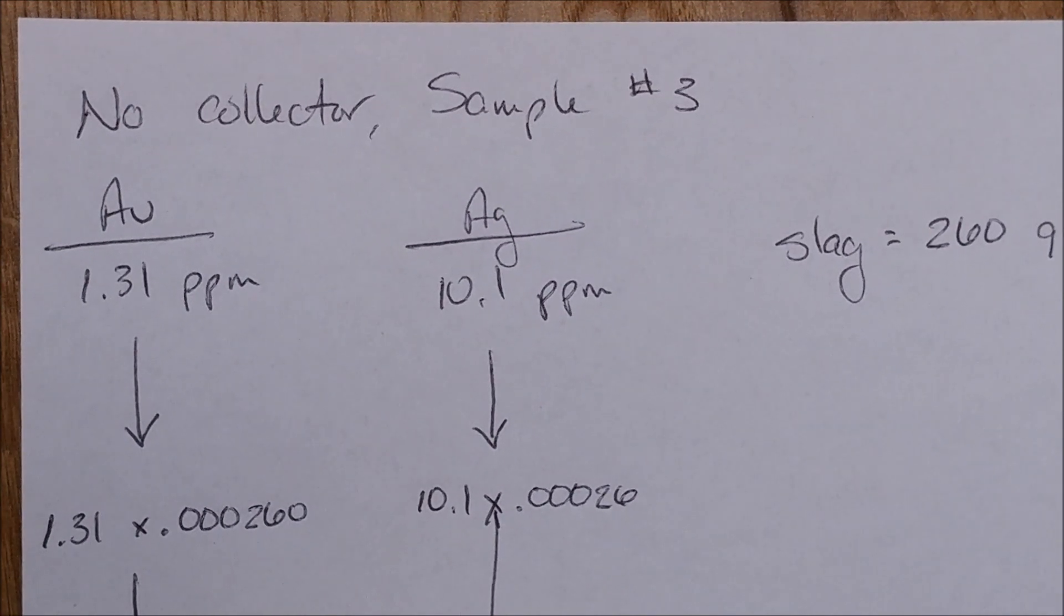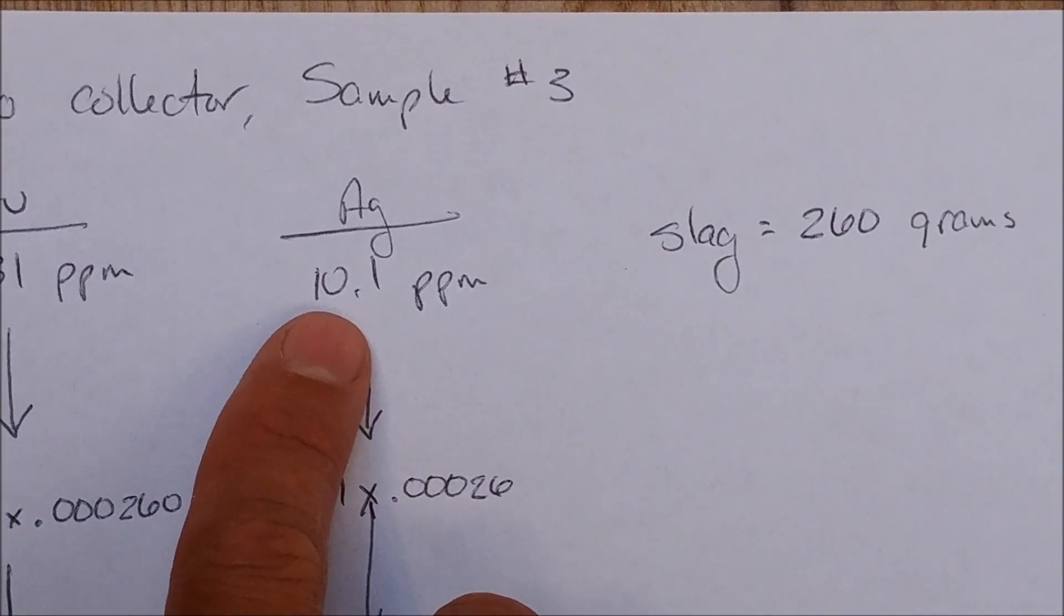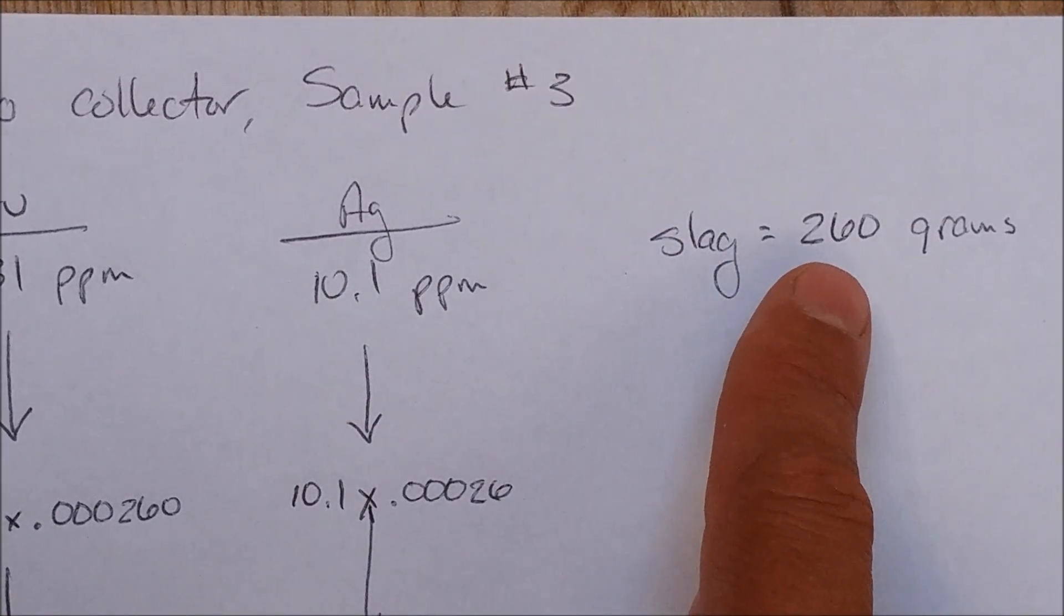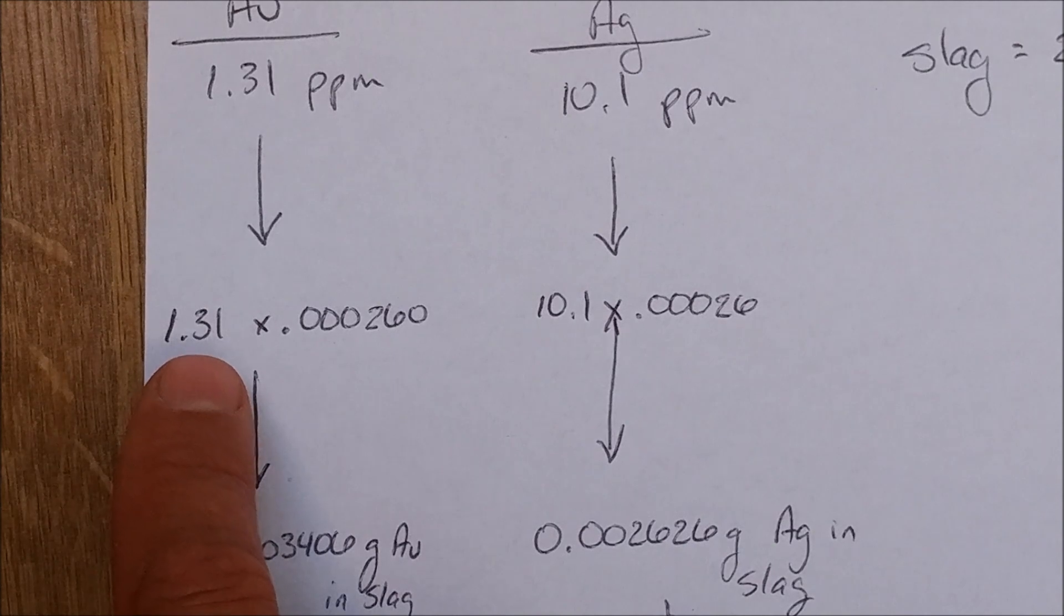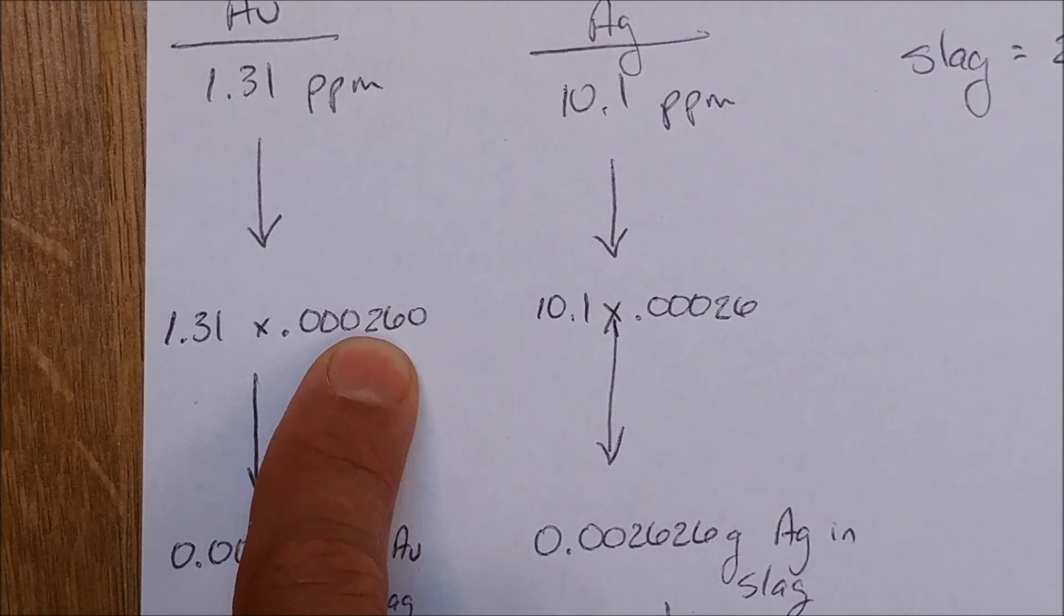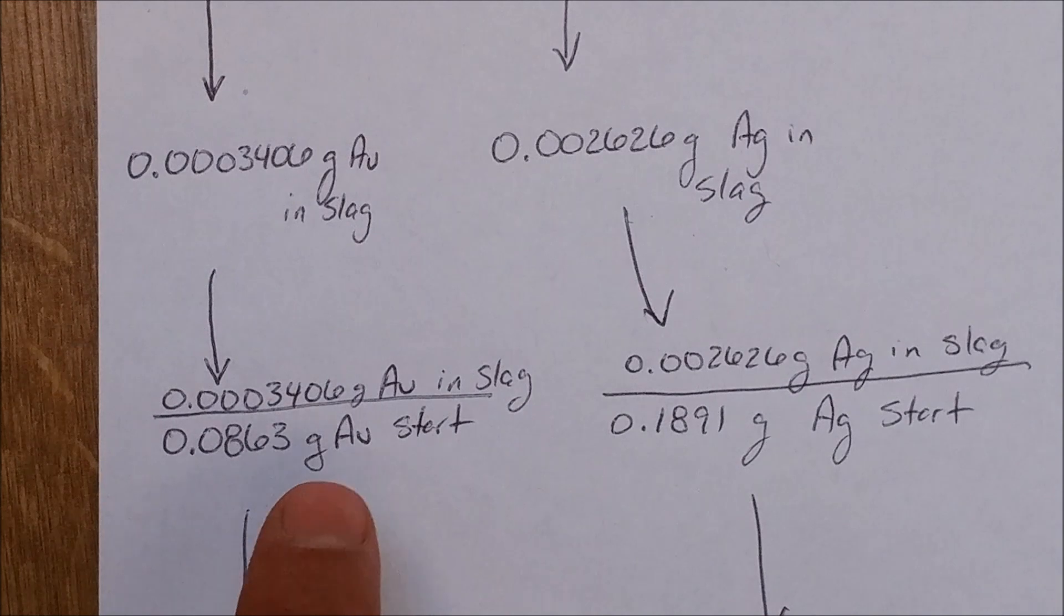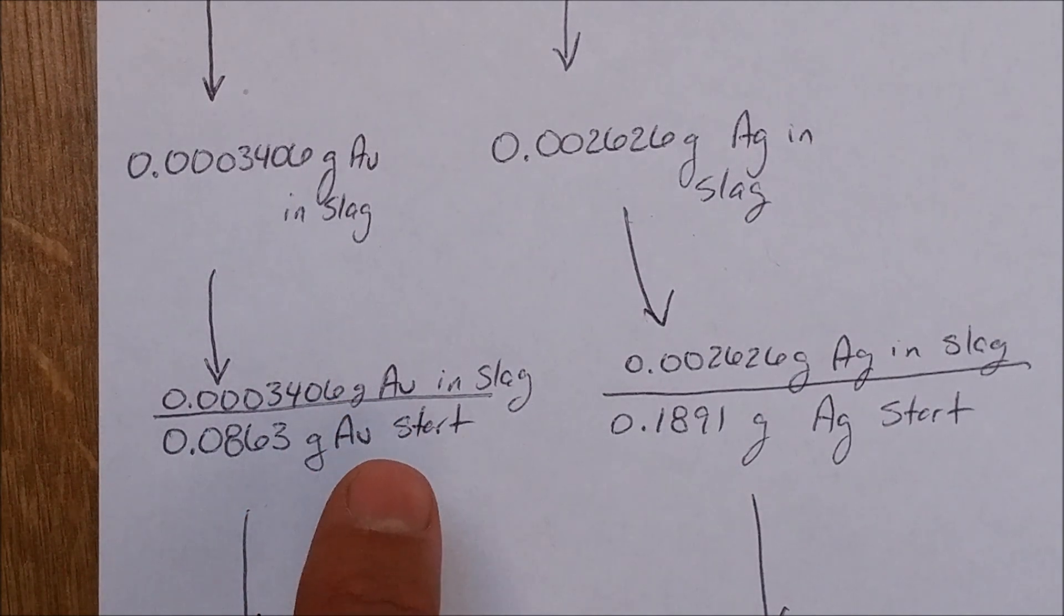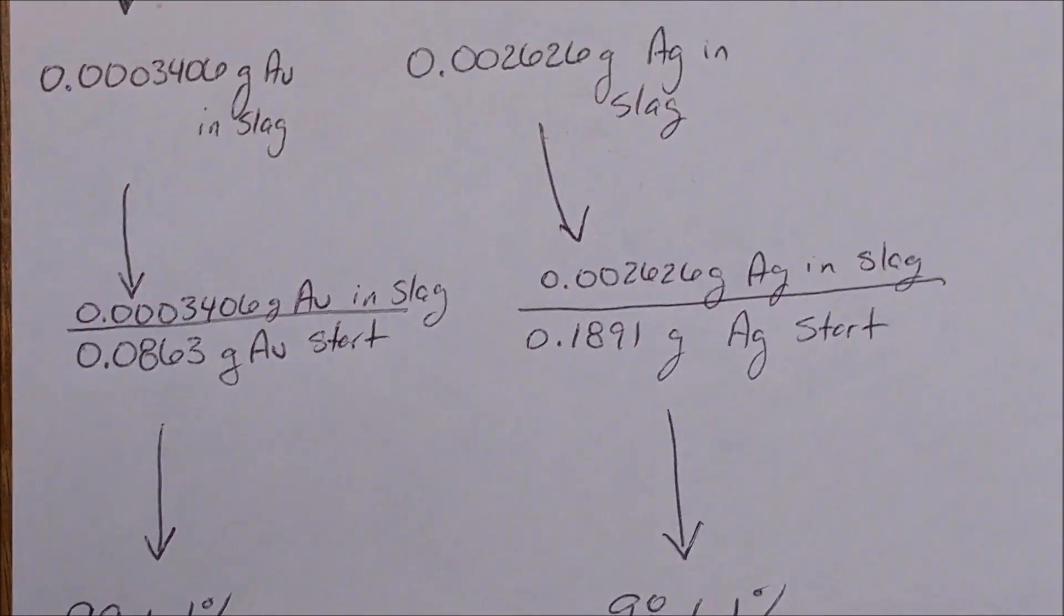Okay, so here is our sample calculation of how we ended up with percent recovery. So we're going to run our no collector sample. This is sample number three. The assay for the gold was 1.31 parts per million and assay for silver was 10.1 parts per million. And the slag for this particular sample weighed 260 grams. So we take our assay value for the gold, multiply it by the grams of slag in metric tons, and we end up with the amount of gold in the slag. So we end up with 0.0003406 grams of gold in the slag. And then you take the grams of gold in the slag divided by the amount we calculated just earlier, the amount of gold we started with in our sample, and you end up with 99.61% recovery. And the same thing, same process for the silver.